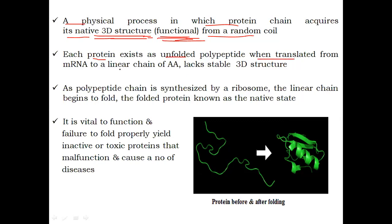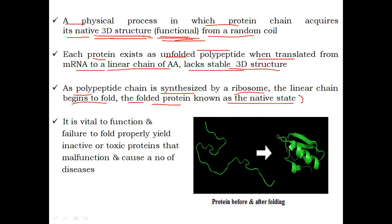Each protein exists as an unfolded polypeptide when translated from mRNA as a linear chain of amino acids, lacking a stable three-dimensional structure. As the polypeptide chain is synthesized by ribosomes from mRNA, the linear chain begins to fold. This folded protein is known as the native-state protein. Proper folding is vital for protein function; failure to fold correctly yields inactive or toxic proteins that malfunction.